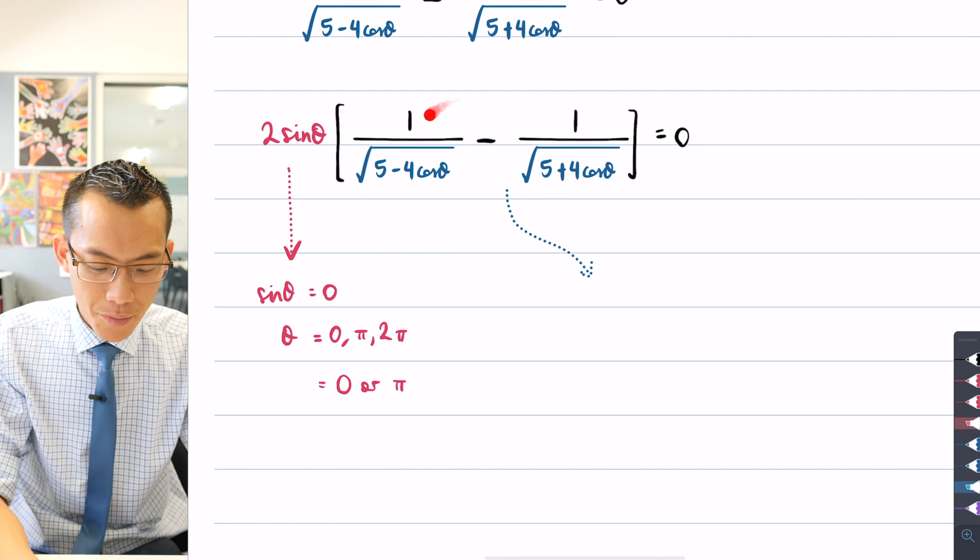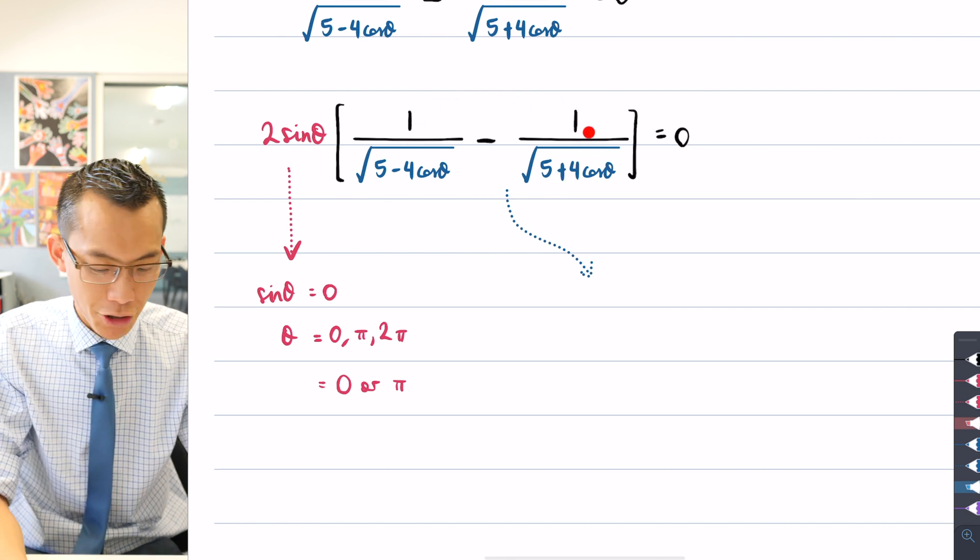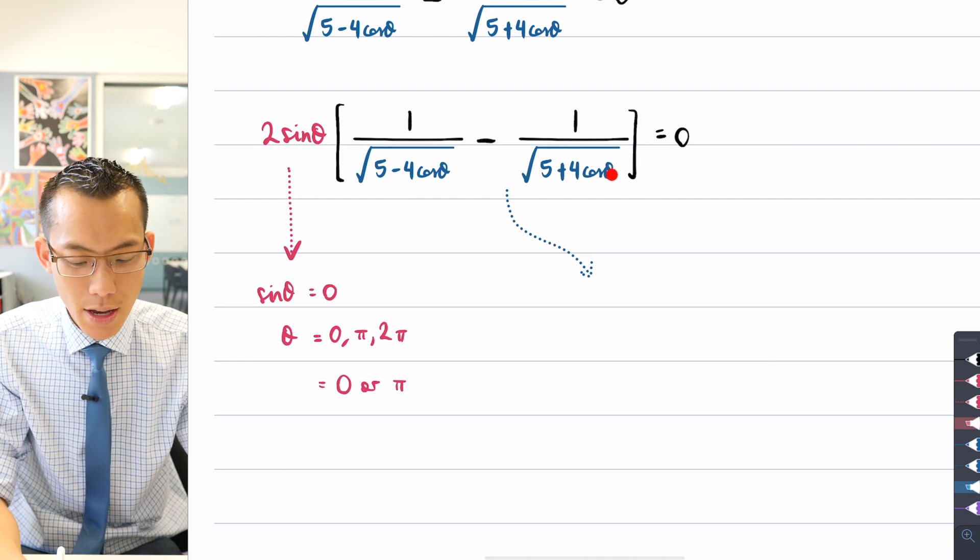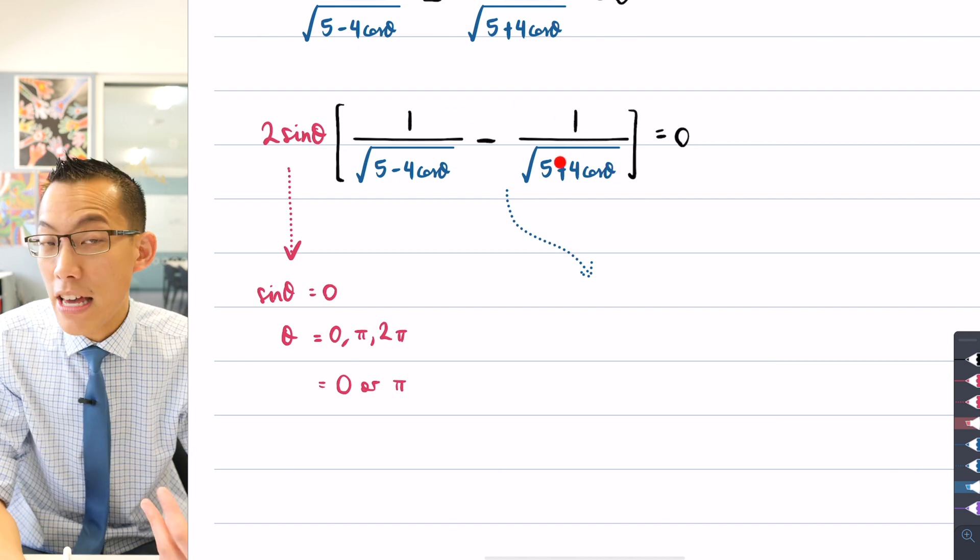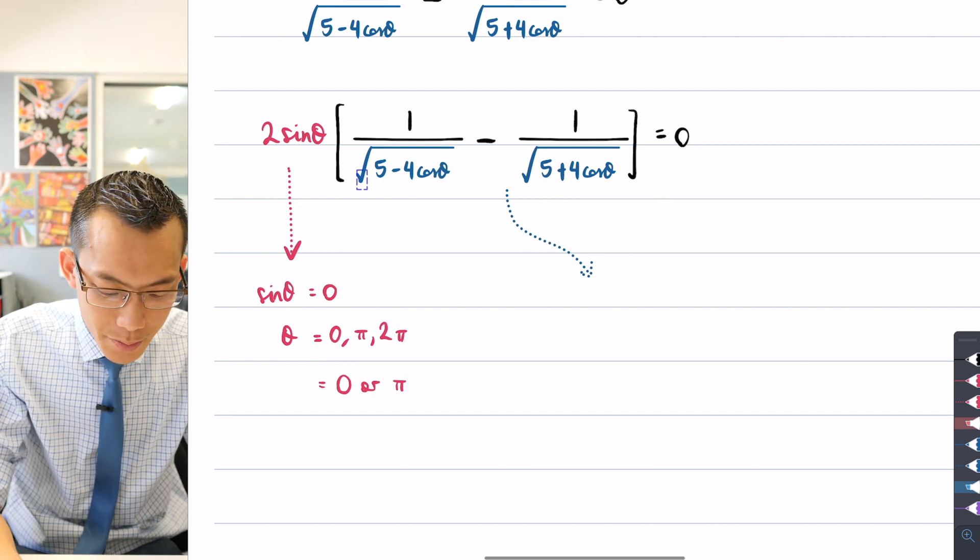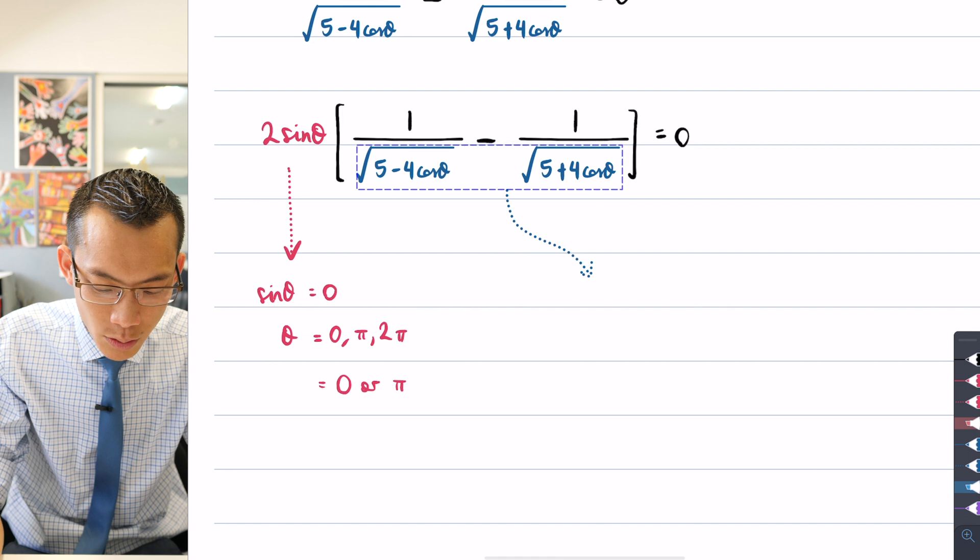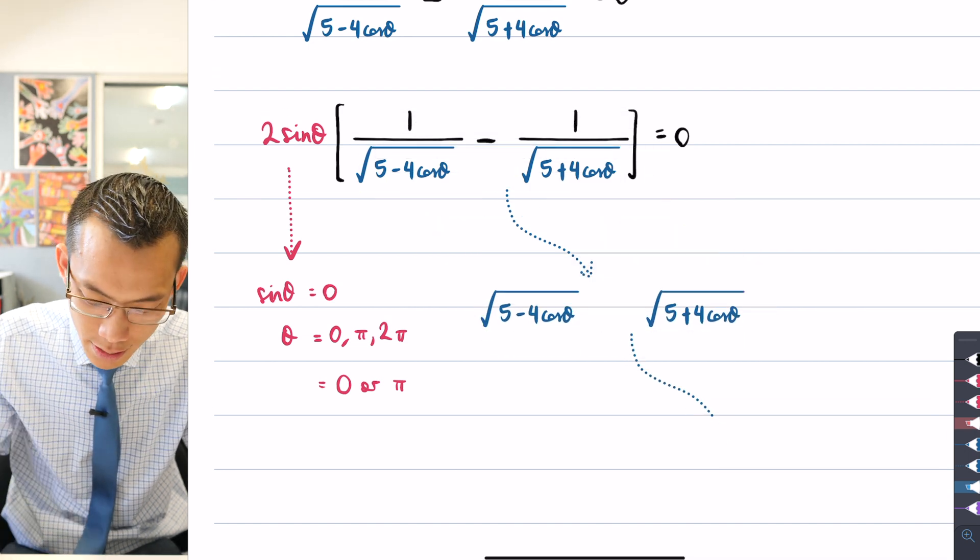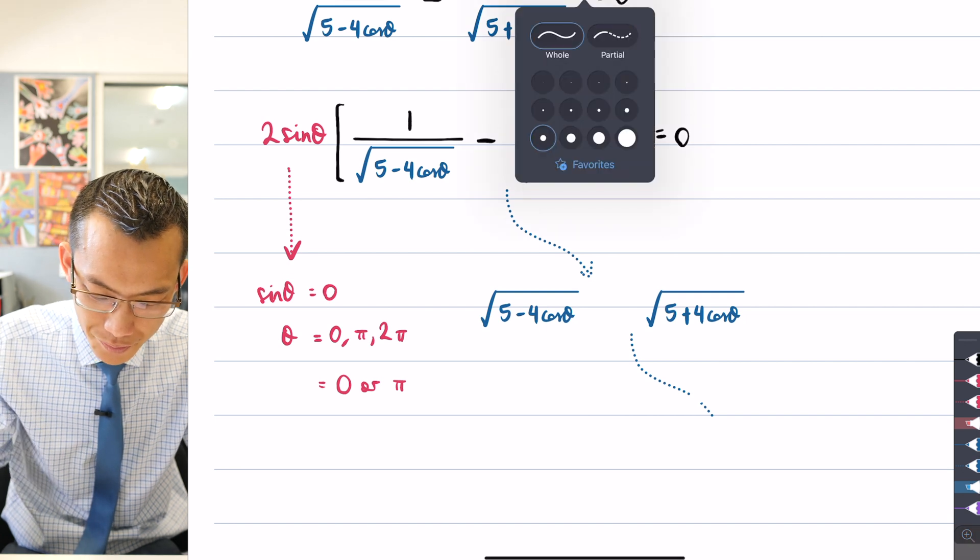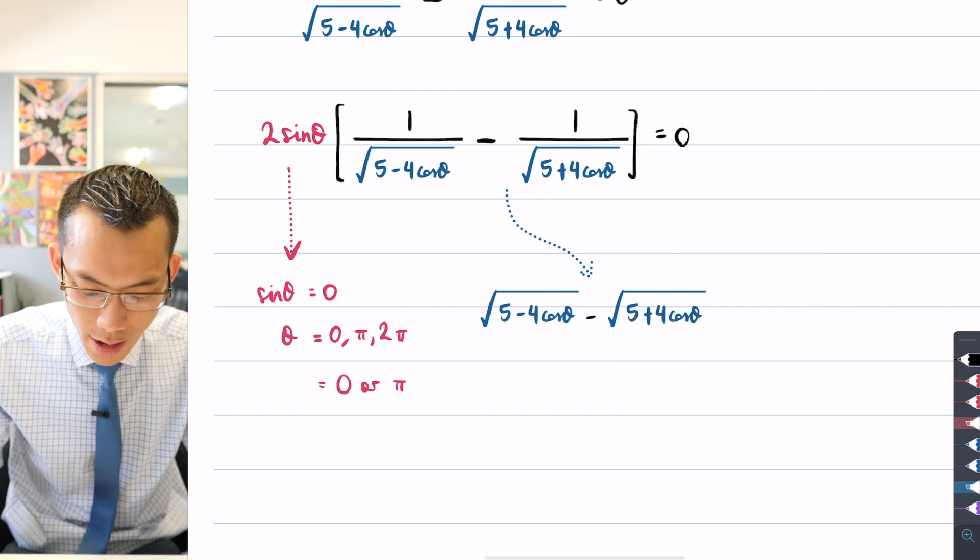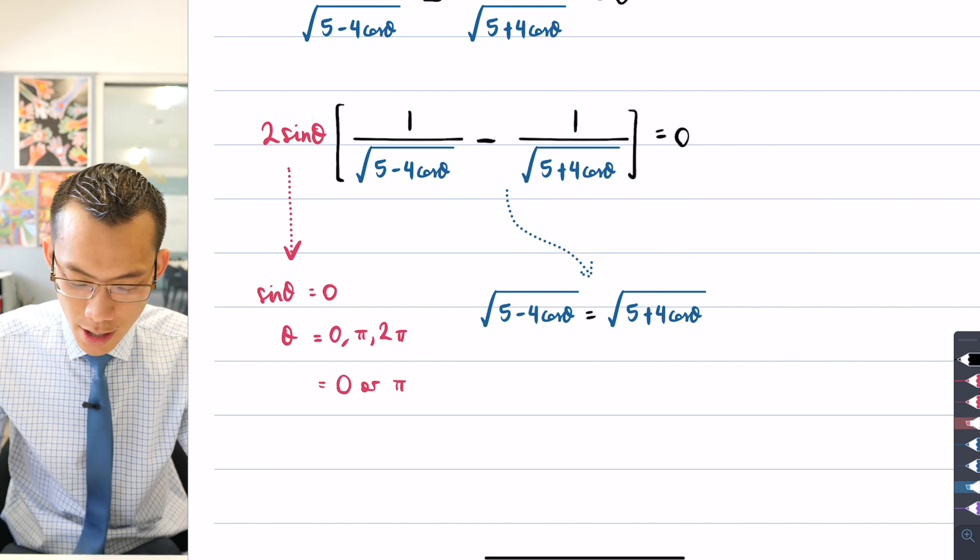So in order to have these two fractions being equal, well, the numerators are already the same. So I just need to focus on the denominators. These two fractions will be the same if their denominators are the same. In other words, what I want is for this denominator to equal this denominator. Let's see what happens if I try and solve for these two things being equal to each other.